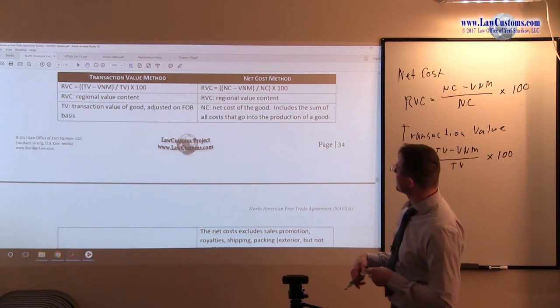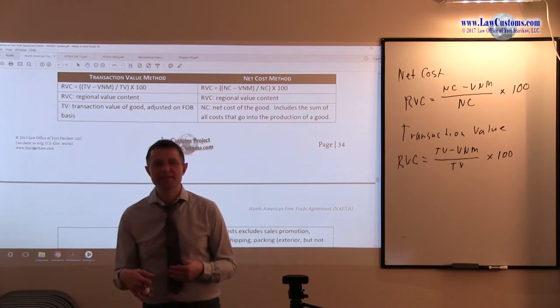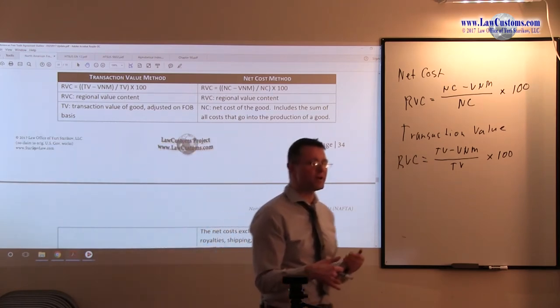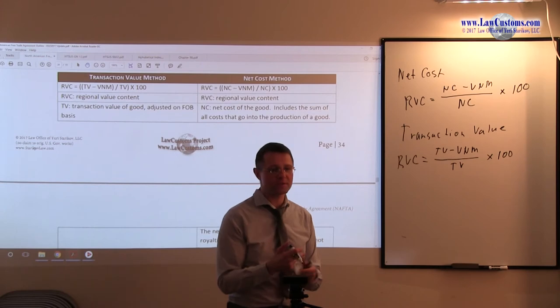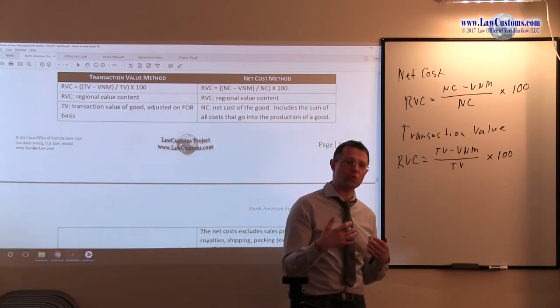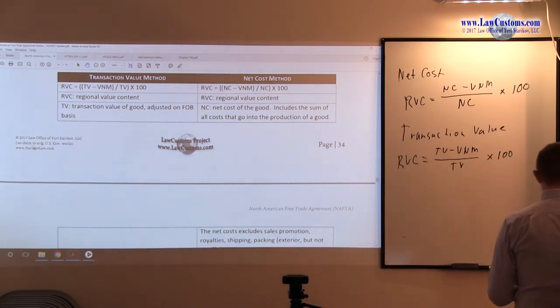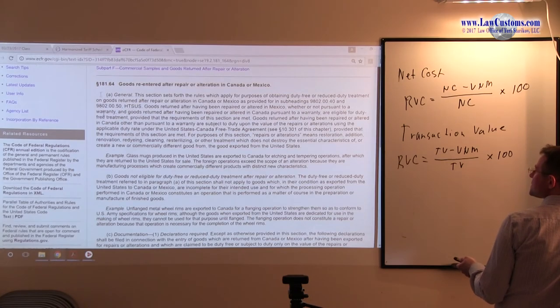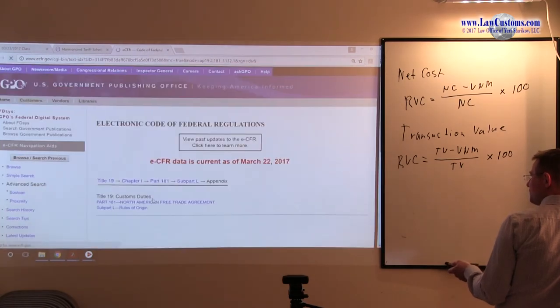The net cost, on the other hand, is something which is used without transaction value. It is the cost of inputs that you put into the product itself that make up. You add up various labor costs, you add up the parts, the supplies, the raw materials, and you get the net cost of what it cost, what was the cost to produce the product. With the cost of transaction value being adjusted on FOB basis, this concept is very well provided for, or defined for, in the appendix of the 181, part 181.